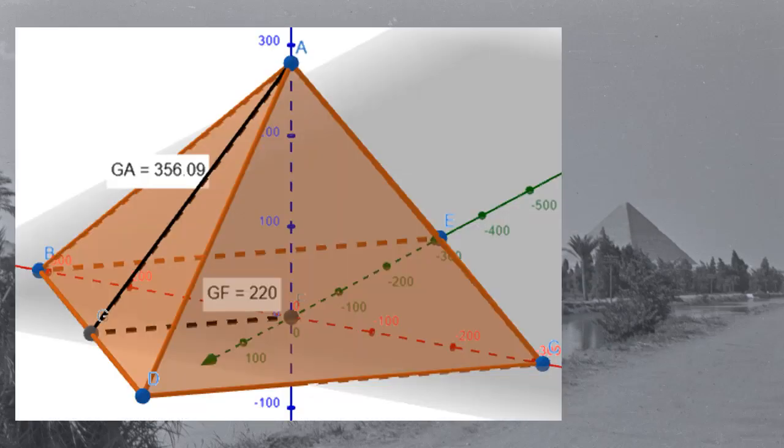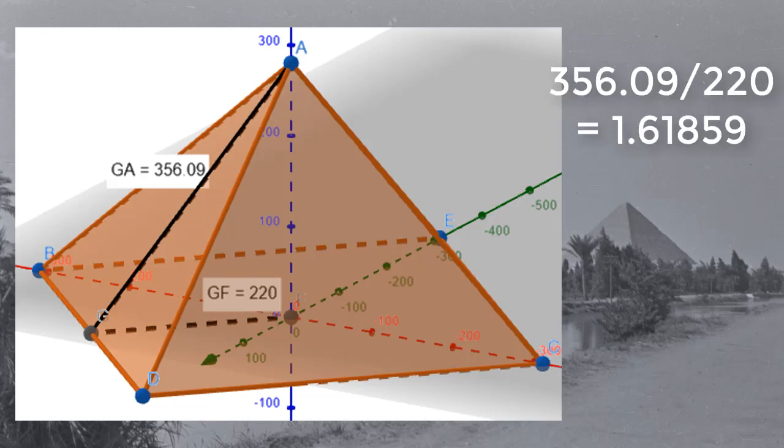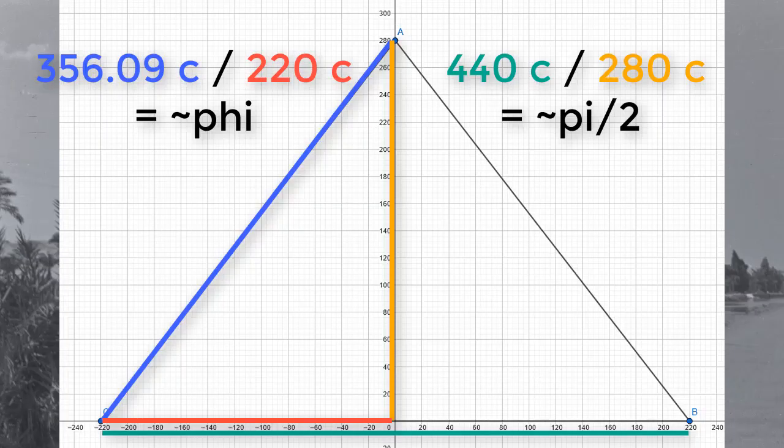We can find phi in the pyramid by dividing the slope by half the base. This gives us 356.1 cubits divided by 220 cubits, which is within three decimal points of phi. This is, of course, the same triangle that brought us pi. It is quite interesting that pi and phi sort of meet in this triangle and can be used to approximate one another. It does bring up the question, however: if the Egyptians knew about pi, could the instance of phi in the pyramid simply be a consequence of building the pyramid around pi?